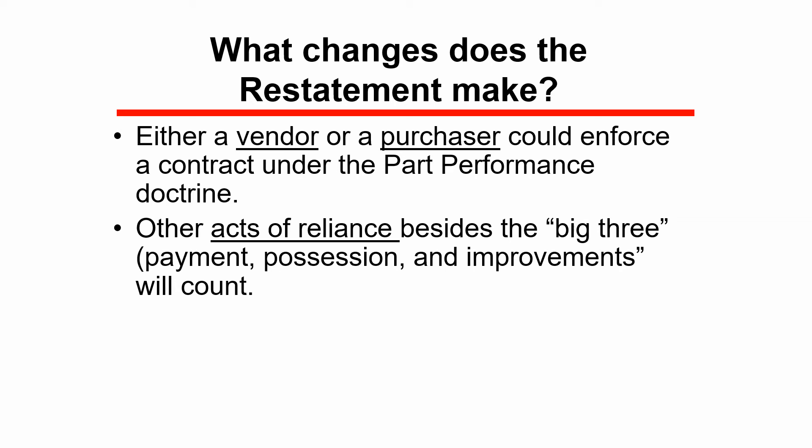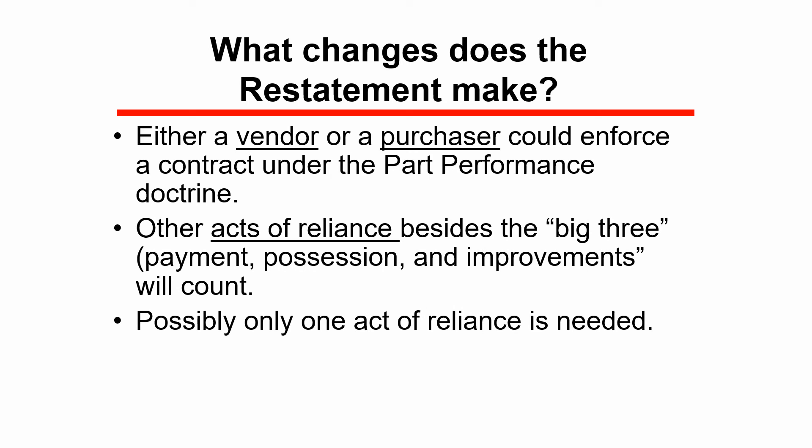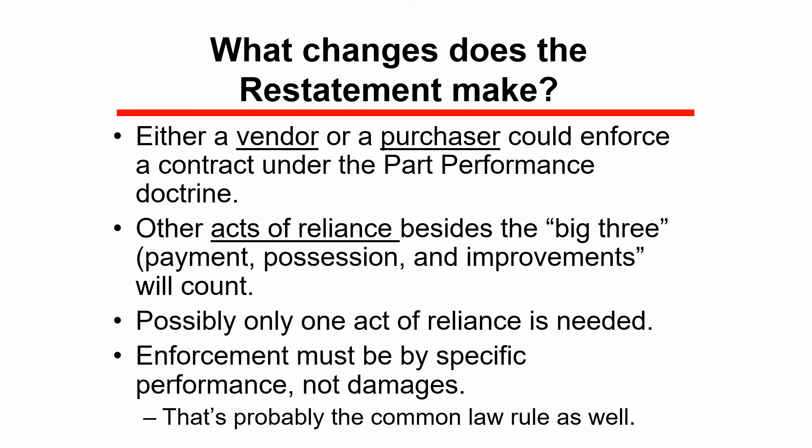It's not hard to think of other kinds of acts that would show that sort of reliance. Possibly only one act of reliance is needed — under the traditional view, one had to show two of the three acts of payment, possession, and improvements, but maybe under the Restatement just a single act of reliance would work. Finally, enforcement must be by specific performance and not by damages. That's probably the common law rule as well — the part performance doctrine was invented by the equity courts and therefore, in nearly all states, can be enforced only by the equitable action of specific performance.